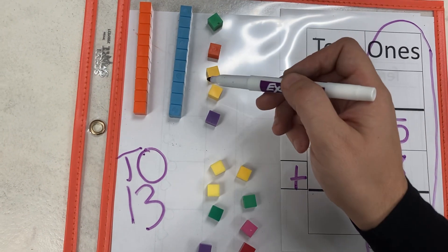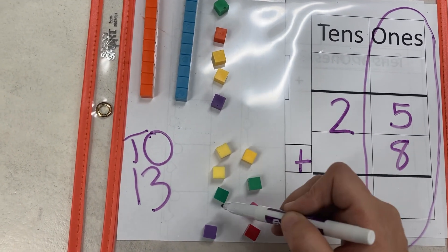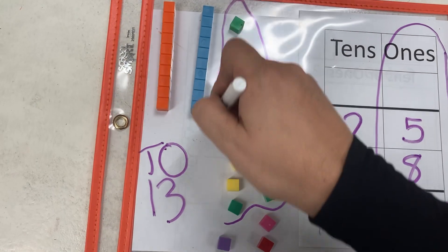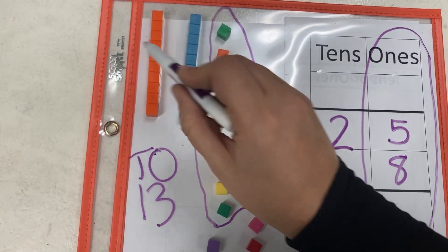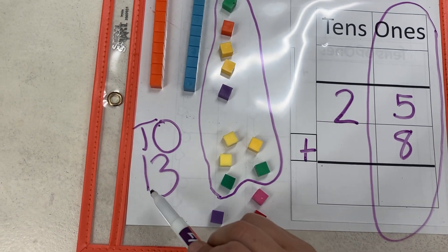Let me show you how I know that. Let's circle a group of 10 here. 1, 2, 3, 4, 5, 6, 7, 8, 9, 10. I'm going to circle that group of 10 right there. See? Now I have a new 10 and I have three ones left over.